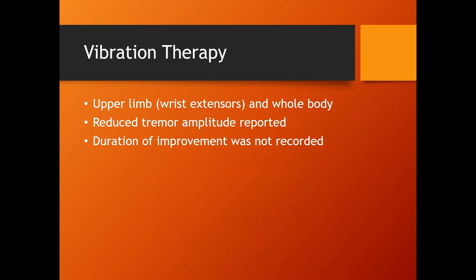The next intervention I'm going to talk about is vibration therapy. They used two different approaches when with the systematic review. One was actual use of like a vibration wand that was directly applied to the forearm and the other was full body vibration. Basically they did the application for 10 minutes and then allowed 10 minutes of rest. In response to the application of vibration, they did find a reduced amplitude in tremor. However, they did not record how long that reduced amplitude lasted.